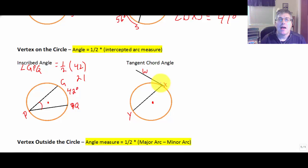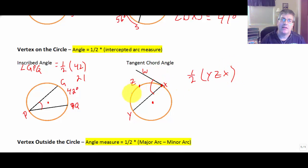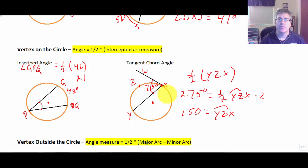The next type of angle with the vertex on the circle is a tangent-chord angle, where WX is a tangent with tangent point at X and chord YX. The angle measure equals one half of its intercepted arc. The intercepted arc here is the minor arc YX, or we could use arc YZX. So if the angle measure is 75 degrees, then 75 equals one half of arc YZX. Multiplying both sides by 2, we find that arc YZX is 150 degrees.